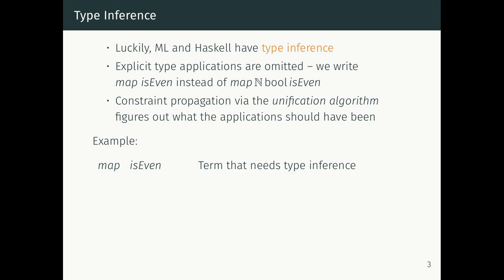Luckily, languages like ML, Haskell, and nowadays even C# and Java have started to grow some type inference. This means you don't need to write explicit type applications — you can just write 'map isEven' instead of 'map Nat Bool isEven'. The compiler figures out the types of polymorphic things using an algorithm called type inference, which is basically a kind of constraint propagation. Whenever you have a type you don't know, you introduce a unification variable, and as you type-check the rest of the program you incrementally solve these constraints.